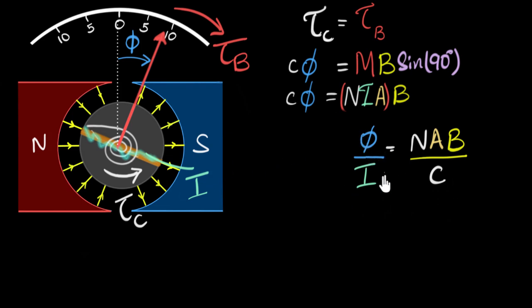First of all, look at the units of this. Because there's a deflection on the numerator and current in the denominator, the unit becomes degrees per ampere. So let's take some values. Imagine, in our galvanometer, this value was a thousand degrees per ampere.